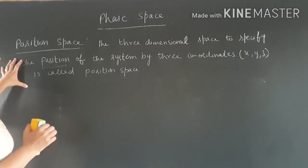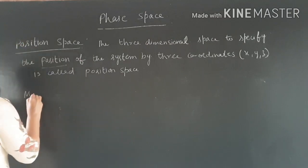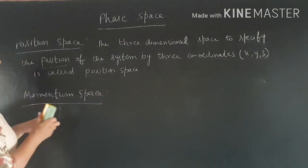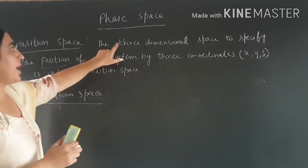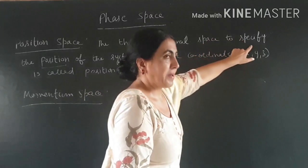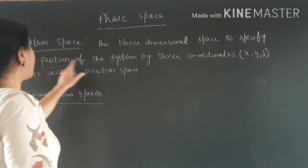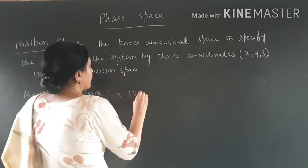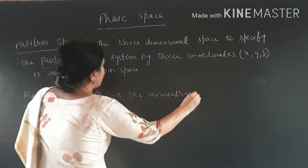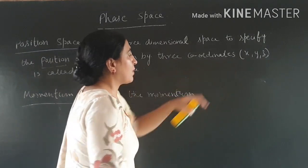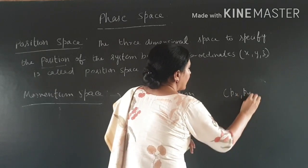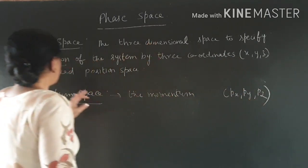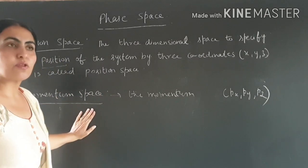Next is momentum space. Momentum space is the three-dimensional space used to specify the momentum of the system by three coordinates: Px, Py, and Pz — the momentum coordinates. So here we have position coordinates X, Y, Z and momentum coordinates Px, Py, Pz, and the space defined by Px, Py, Pz is called momentum space.